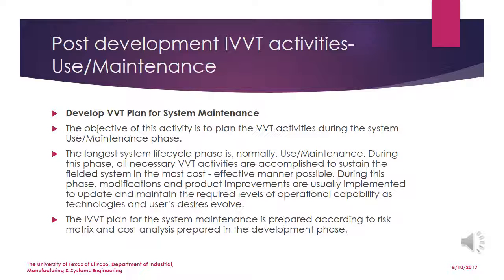The main objective of developing a VVT plan for system maintenance is to plan VVT activities during the use and maintenance phase. The longest system life cycle phase is normally use and maintenance. During this phase, all necessary VVT activities are accomplished to sustain the fielded system in the most cost-effective manner, and modifications and product improvements are implemented to maintain required levels of operational capability as technologies and user needs evolve. The VVT plan for system maintenance is prepared according to the risk matrix and cost analysis from the development phase.